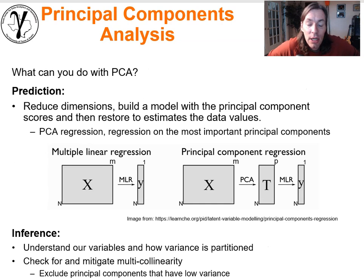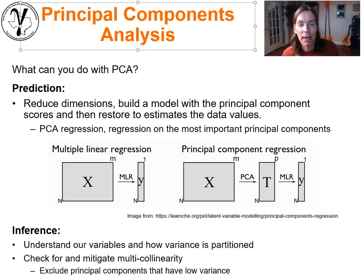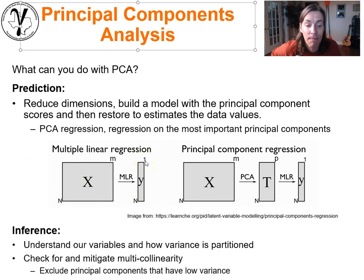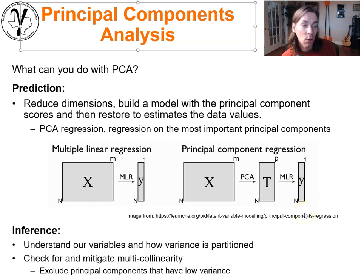What can we do with PCA? First, interpret and understand the loadings — understand what's going on. We can also work in lower-dimensional space to make predictions. Multi-linear regression takes an n by m feature matrix and predicts y. Principal component regression does PCA first to get a reduced representation, then does multi-linear regression on that — reducing multicollinearity issues for improved model stability.